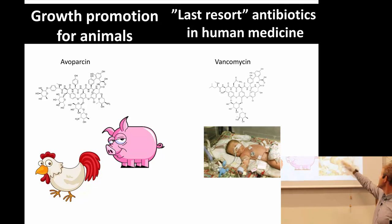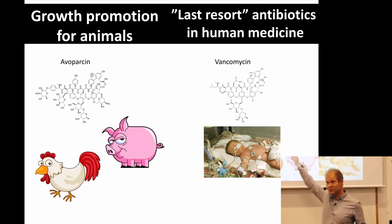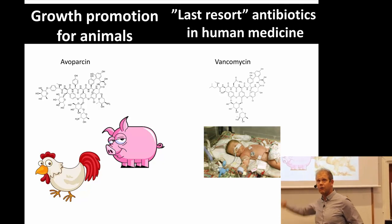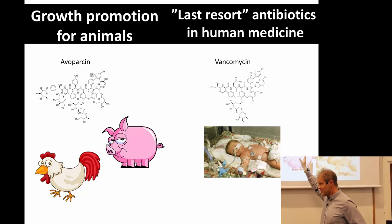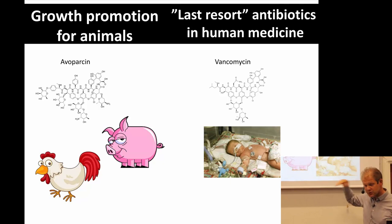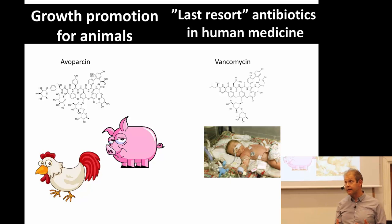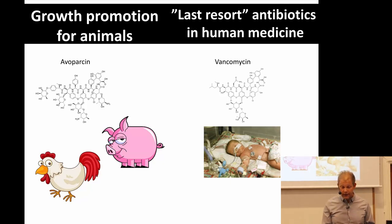So basically, you're driving vancomycin resistance by treating animals with Avoparsin. This is no longer used because it's been understood that this is a risk — at least in Europe. One discovered this by finding increases in vancomycin-resistant enterococci and then seeing the link.